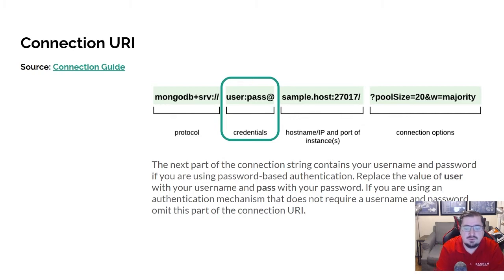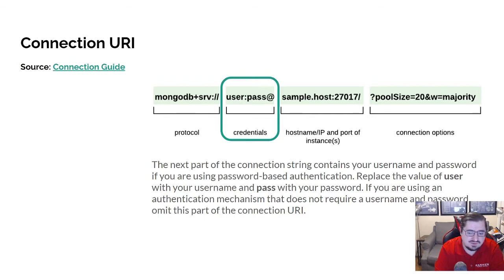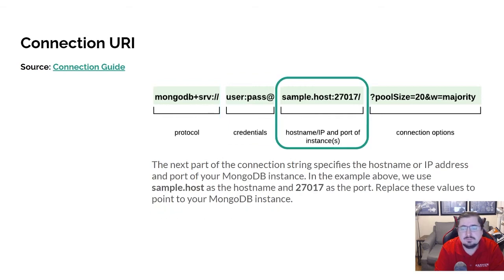In the URI, you just replace 'user' and 'pass' with the part that you need. Some authentication mechanisms don't necessarily require the username and password to be in there. The next part is the hostname and the instance — that can be a hostname or an IP address. Either one can be there. And then the part after that is the port. The current example is using the default port, but that can be changed.